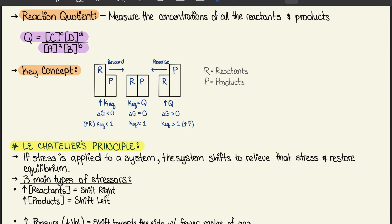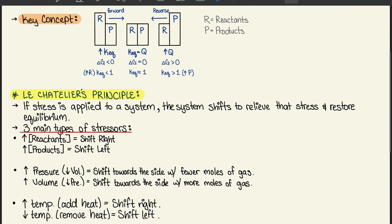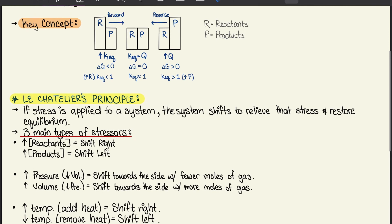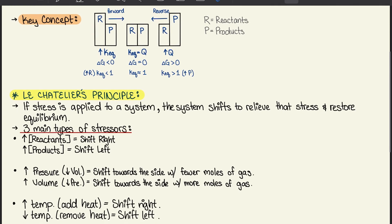So moving on to 6.2, Le Chatelier's principle. So if stress is applied to a system, the system shifts to relieve that stress and restore equilibrium. There are three main types of stressors.